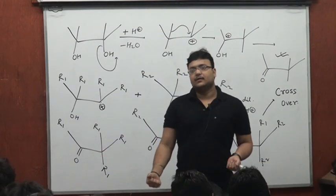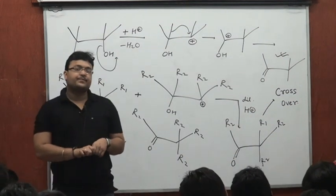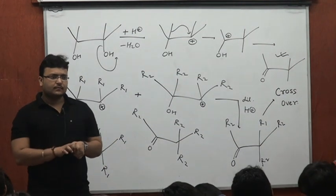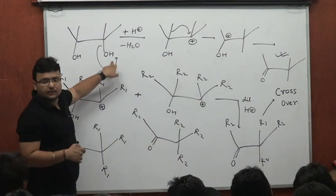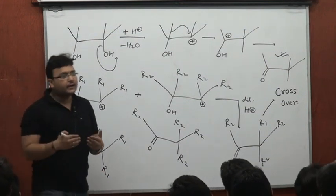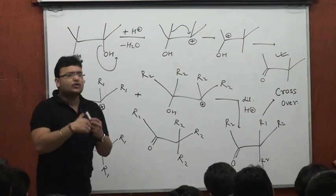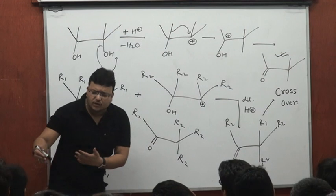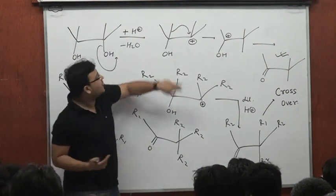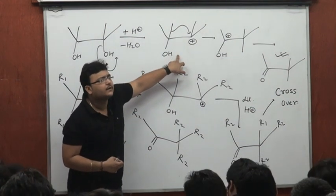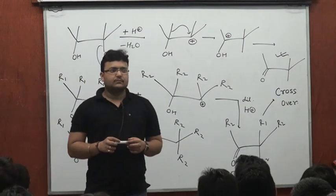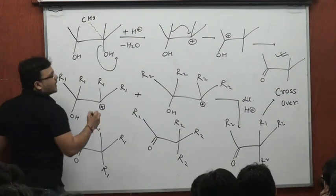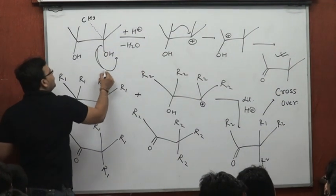Such intramolecular mechanisms with no crossover product would make you feel that loss of water and movement of the alkyl group are occurring together. Although I speak of a carbocation involving a shift and becoming a more stable carbocation, if these two steps occur together, the carbocation would have a very, very short life. There are theories which advocate that there is a three-membered ring formation as a transitory state.